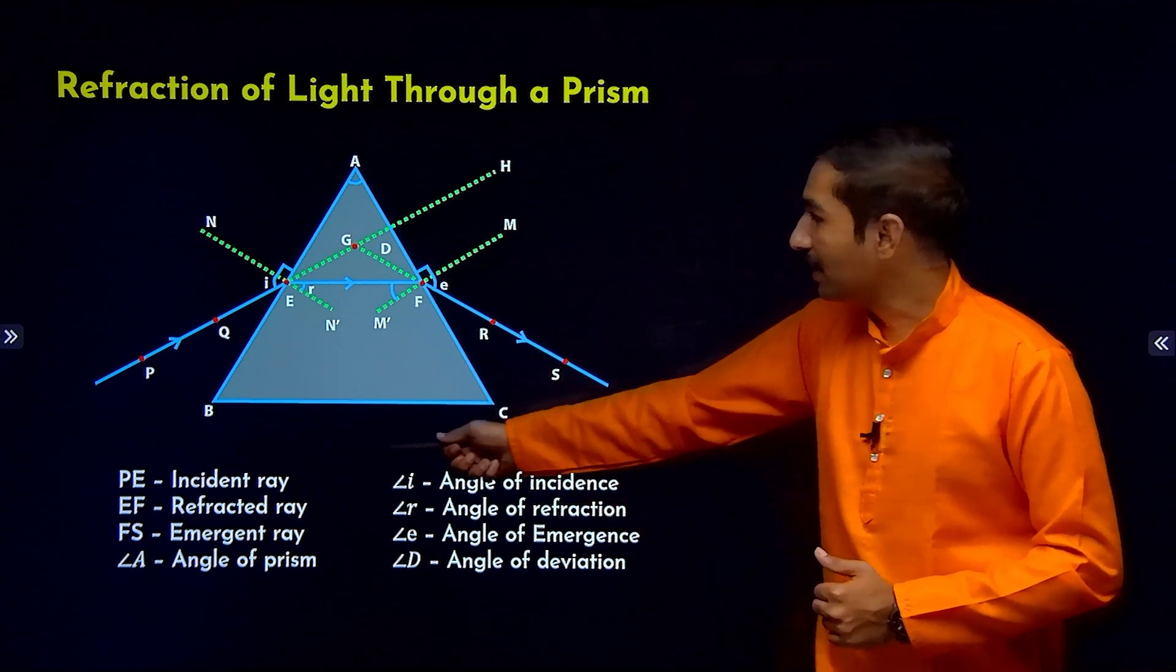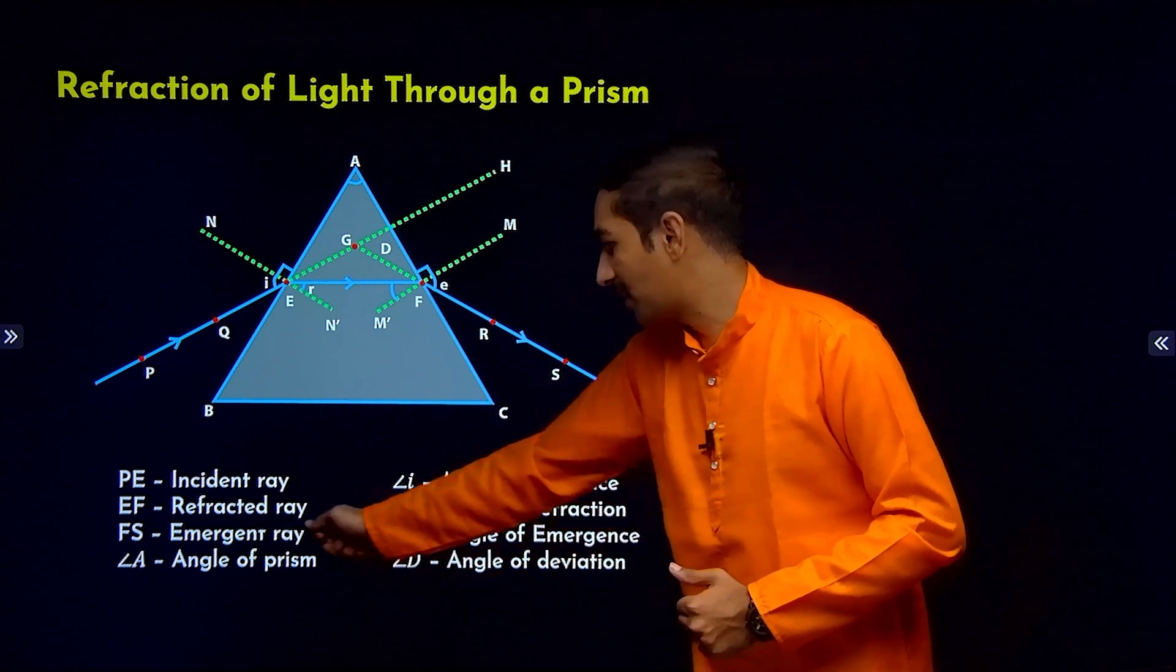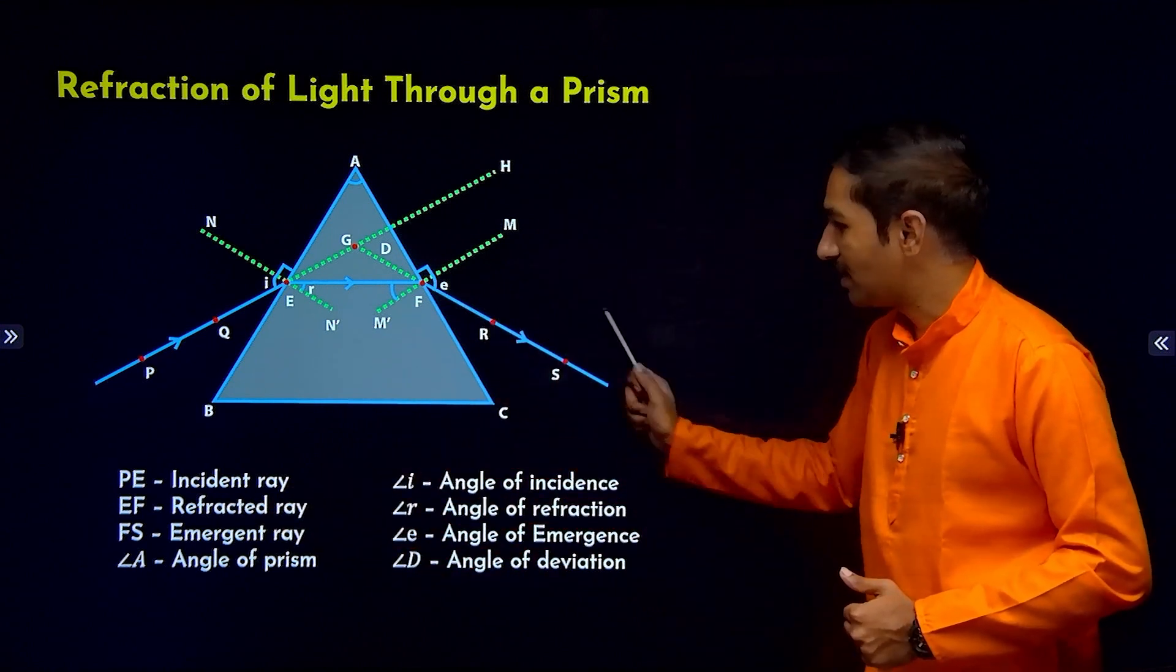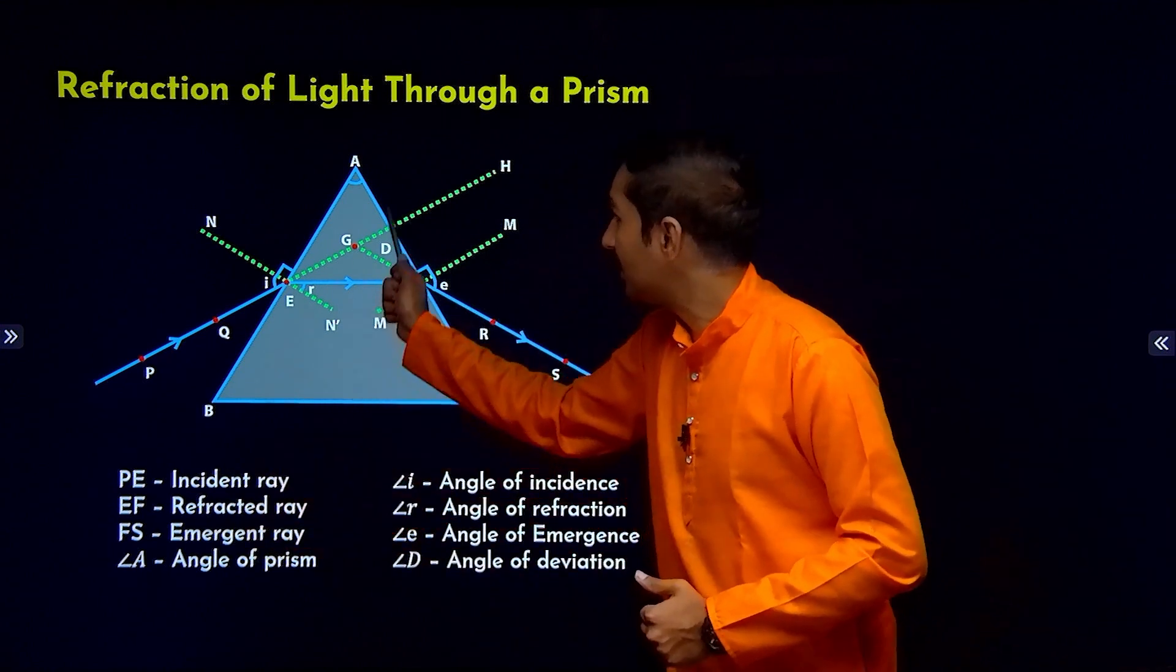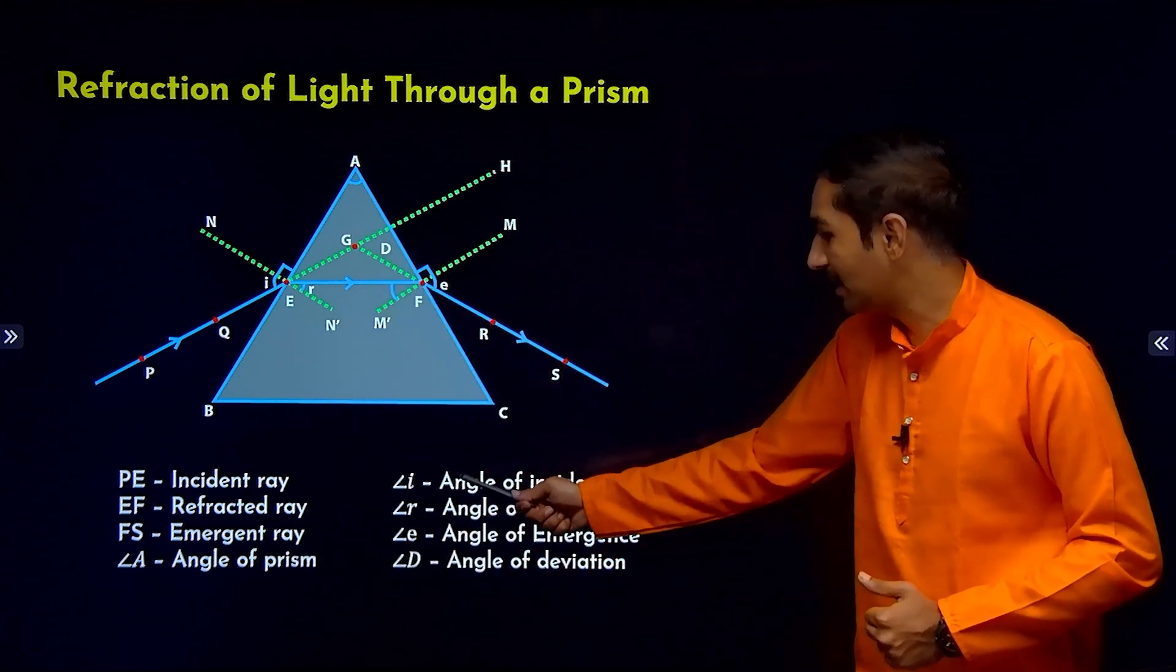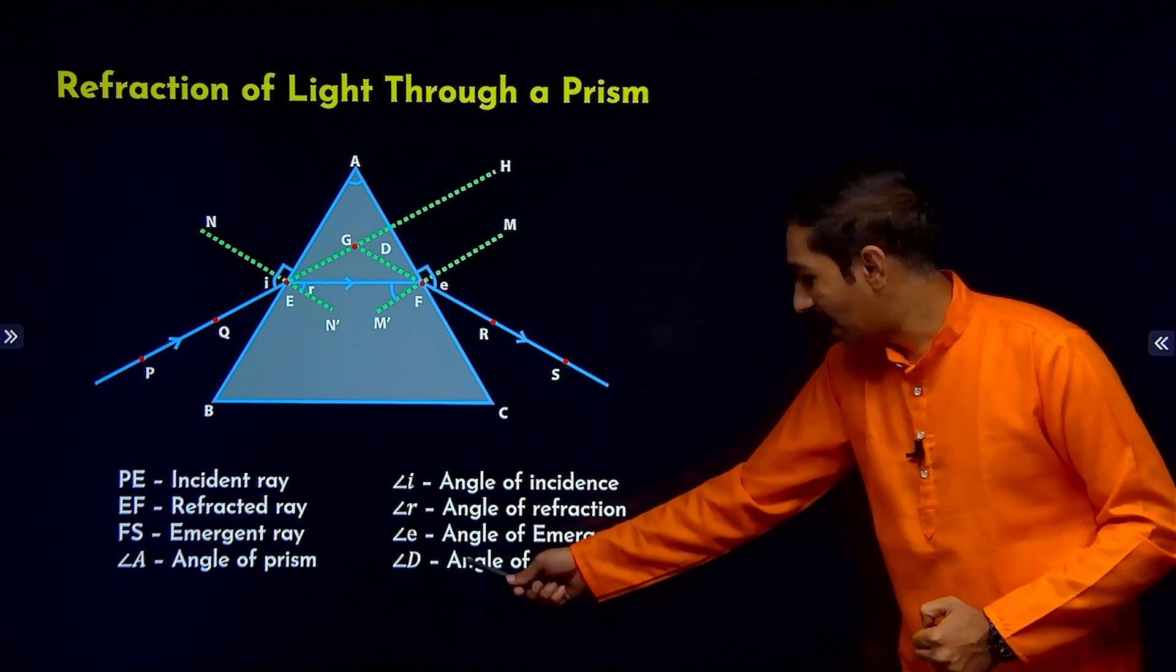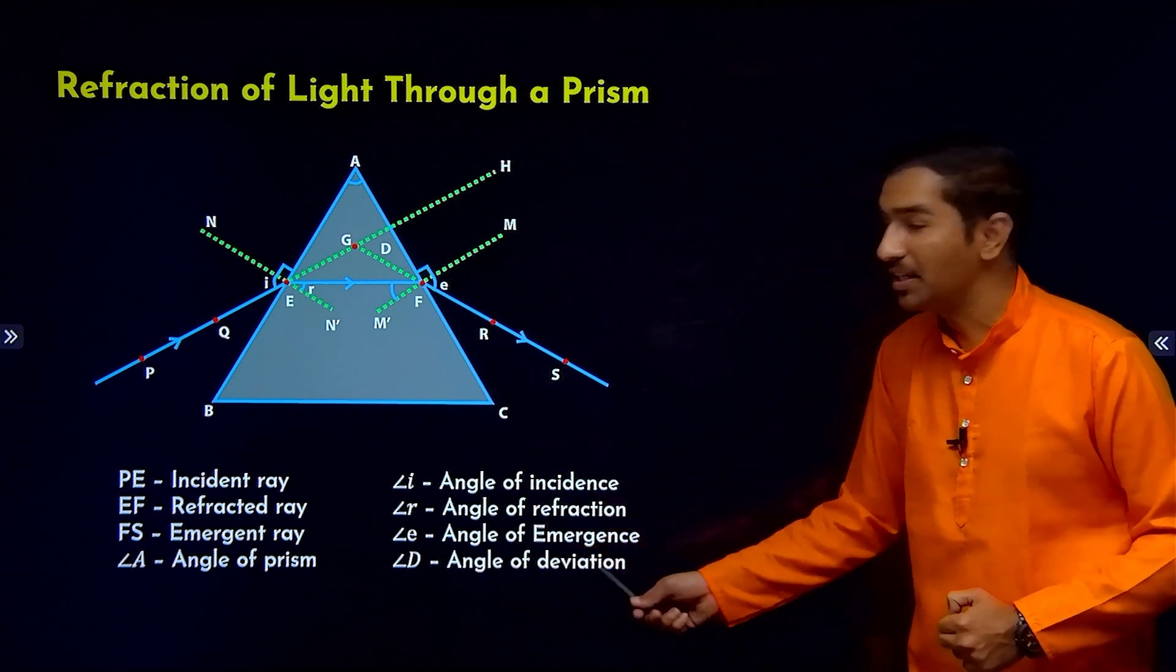So PE is incident ray, EF is refracted ray, FS is emergent ray, angle A - this angle is called as angle of prism. Then angle i is angle of incidence, angle r is angle of refraction, angle e is angle of emergence, angle D is angle of deviation.